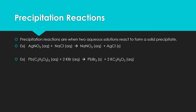Our last reaction type is precipitation reactions. This is when we have two aqueous solutions reacting to form a solid precipitate. Two salt solutions — dissolved, with free ions floating around — are poured together, and two of the ions come together to form something insoluble. We get that solid, which is the precipitate. The part that's left over is still aqueous, with ions floating in solution. We look at those states of matter to recognize these reactions.